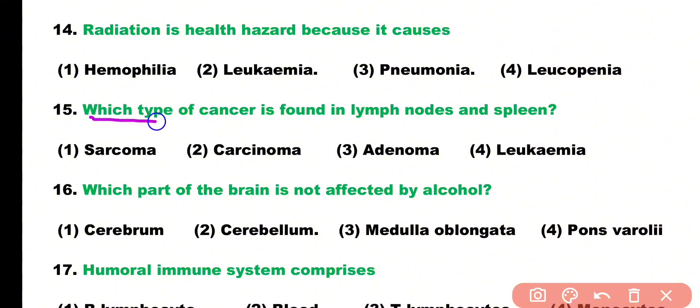Question number fifteen: which type of cancer is found in lymph nodes and spleen? Options: sarcoma, carcinoma, adenoma, leukemia.